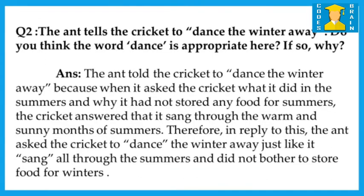Question number two: The ant tells the cricket to dance the winter away — is the word 'dance' appropriate here, and why? Answer: The ant told the cricket to dance the winter away because when it asked what the cricket did in summer and why it had not stored any food, the cricket answered that it sang through the warm and sunny months of summer. Therefore the ant asked the cricket to dance the winter away, just like it sang all through summer and did not bother to store food for winter.